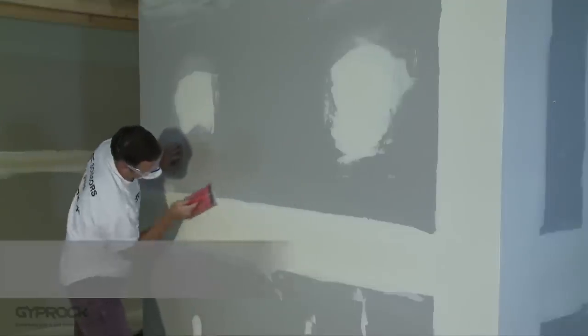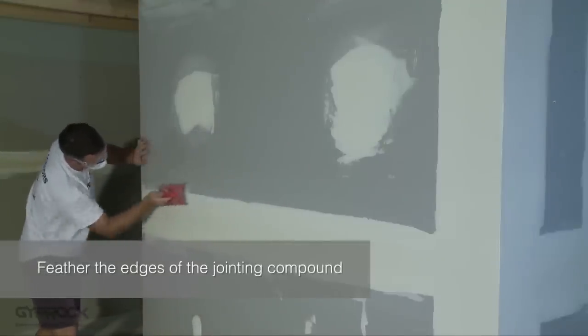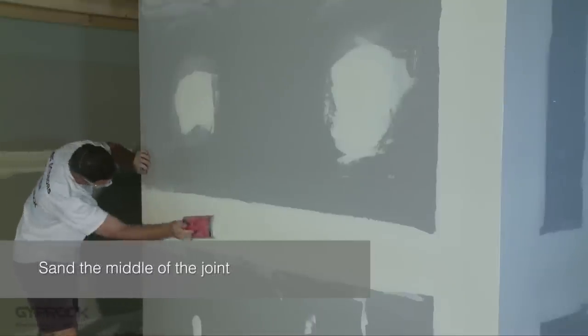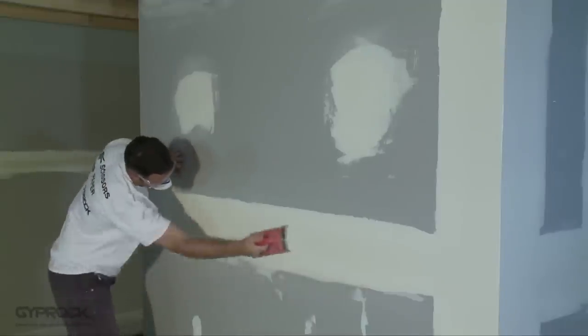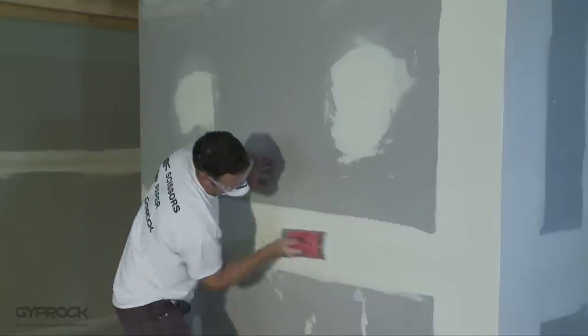Start by gently feathering the edges of the jointing compound, taking care not to scuff the paper surface of the board which can create a furry effect. Sand the middle of the joint lightly using a side to side motion with sandpaper on a float, or on the diagonal if using mesh to avoid scratching the surface of the finish coat.